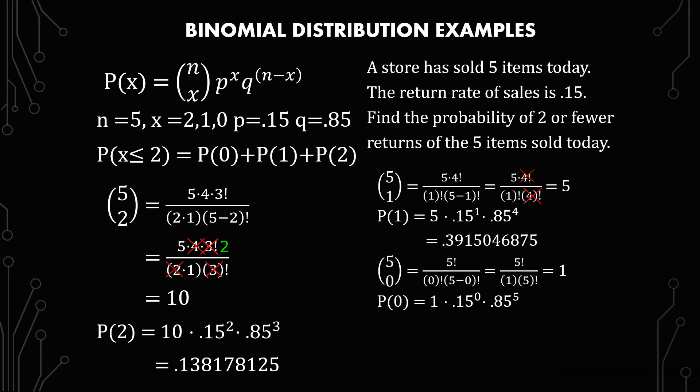So the probability of zero coming back to the store equals one times 0.15 to the zero times 0.85 to the fifth. Now point anything to the zero is one. So you can just treat that as one if you want. I just wrote that here just to be consistent. So we get 0.4437053125.